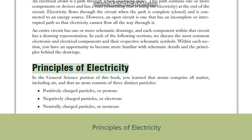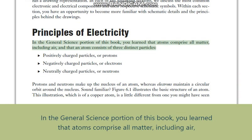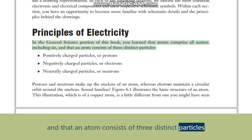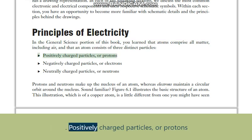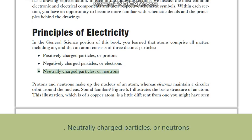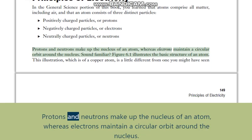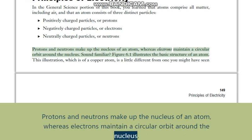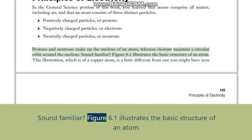Principles of electricity. In the general science portion of this book you learned that atoms comprise all matter, including air, and that an atom consists of three distinct particles: positively charged particles or protons, negatively charged particles or electrons, and neutrally charged particles or neutrons. Protons and neutrons make up the nucleus of an atom, whereas electrons maintain a circular orbit around the nucleus. Figure 6.1 illustrates the basic structure of an atom.